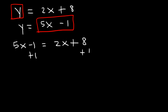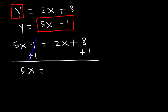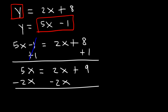Let's add 1 to both sides. Negative 1 plus 1 is 0, so that cancels. So we have 5x is equal to 2x plus 9. Our next step is to subtract both sides by 2x. 5x minus 2x is 3x, and that's equal to 9.